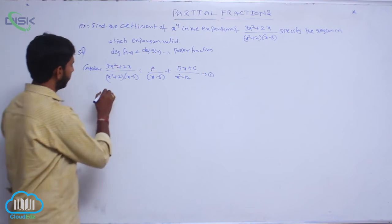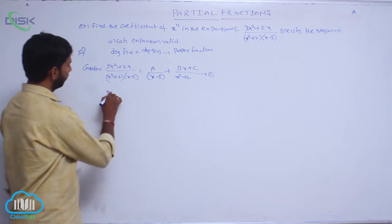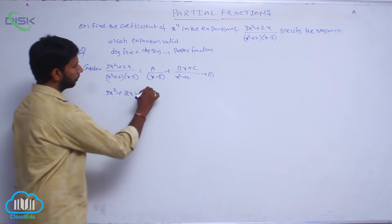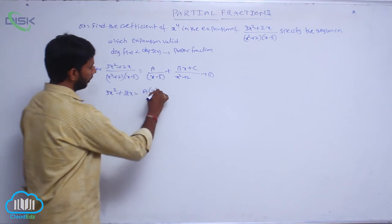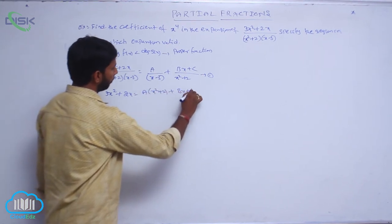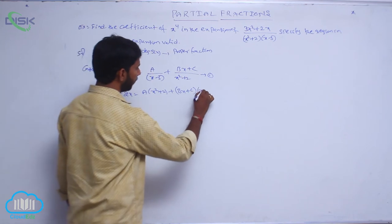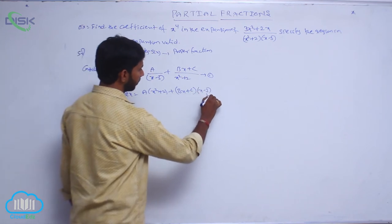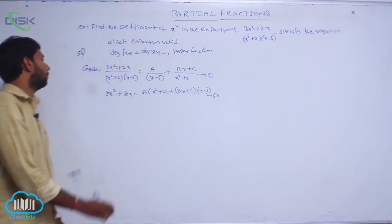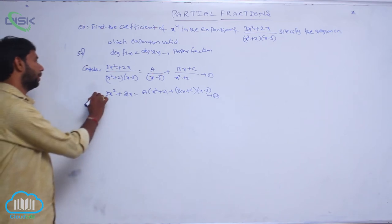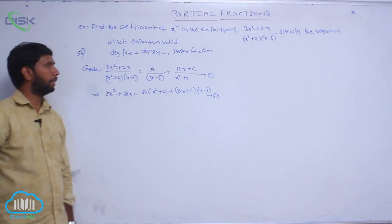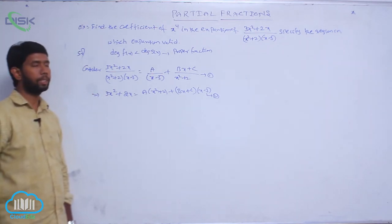Taking LCM on both sides: 3x² + 2x = A(x² + 2) + (Bx + C)(x - 3). Consider this as condition number 2.